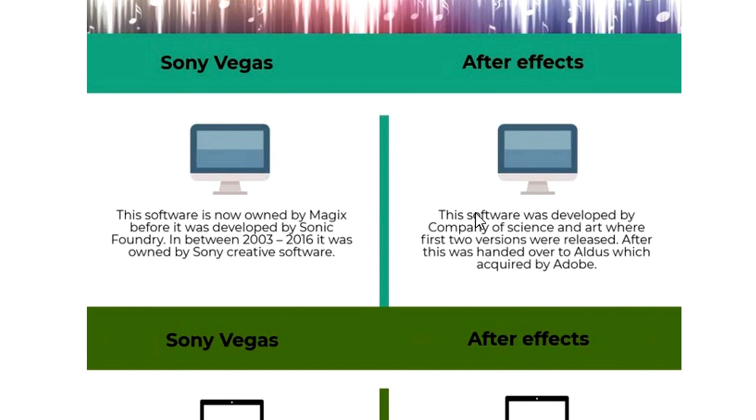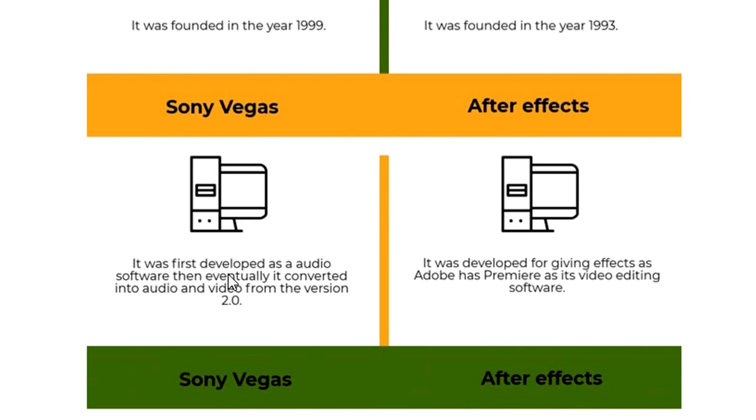In comparison, After Effects was developed by Company of Science and Art, where the first two versions were released, then it was handed over to Aldus and subsequently acquired by Adobe. A really fun fact: Sony Vegas was first developed as audio software, then eventually converted into audio and video from version 2.0. After Effects was developed specifically for giving effects, since Adobe already has Premiere Pro as its video editing software. After Effects is specifically made for adding visual effects like explosions, overlays, and tracking, while Premiere Pro is designed just for editing. When it comes to spicing up your videos, After Effects is really handy — and this can actually be done in Vegas Pro as well.